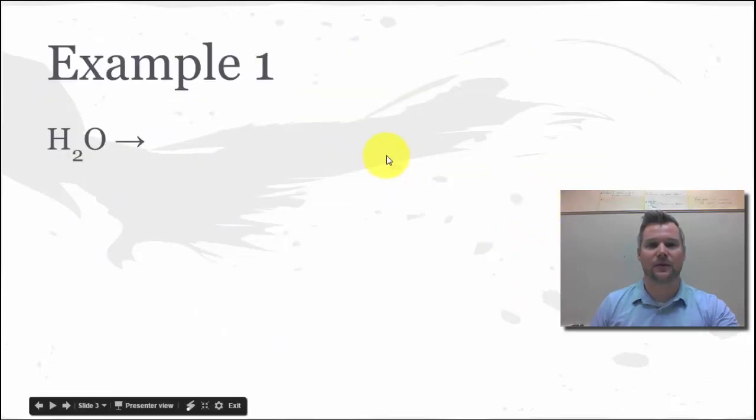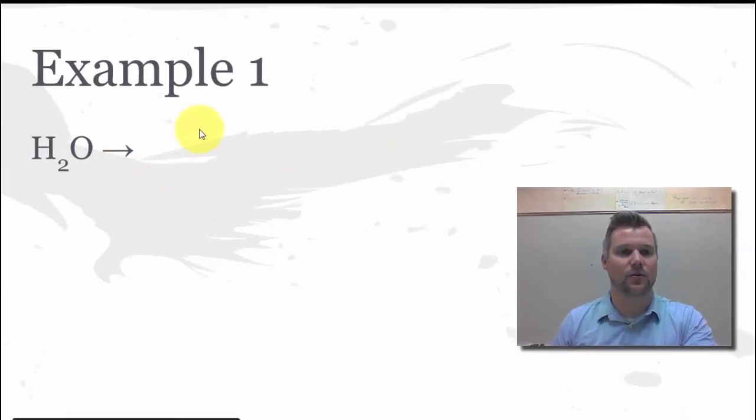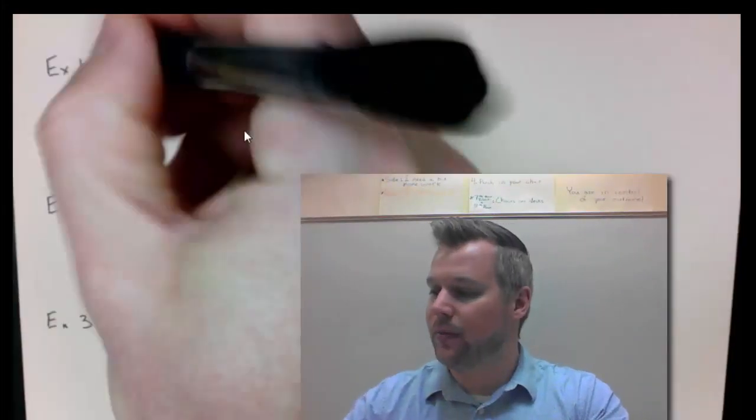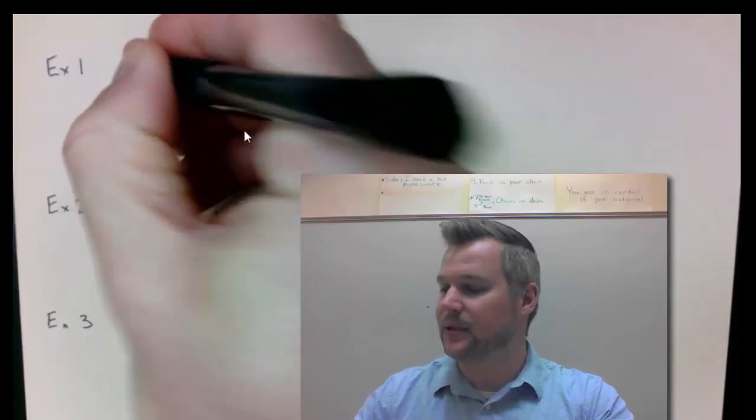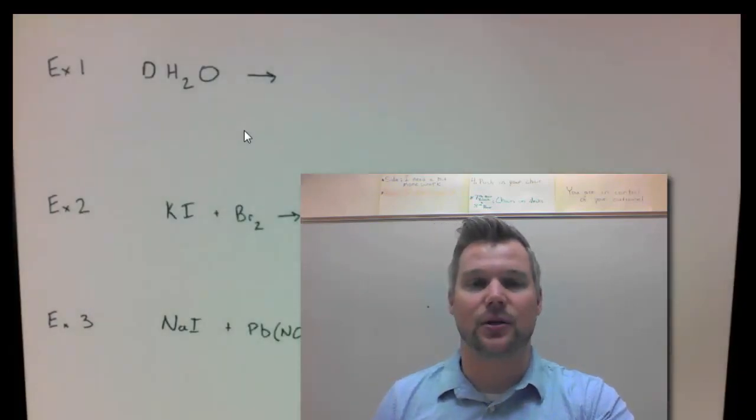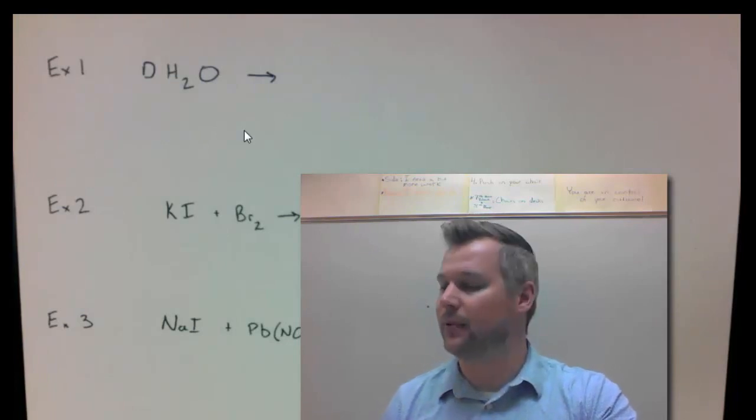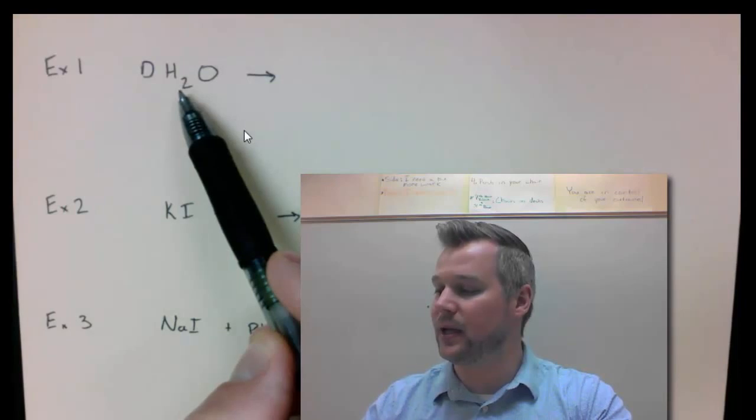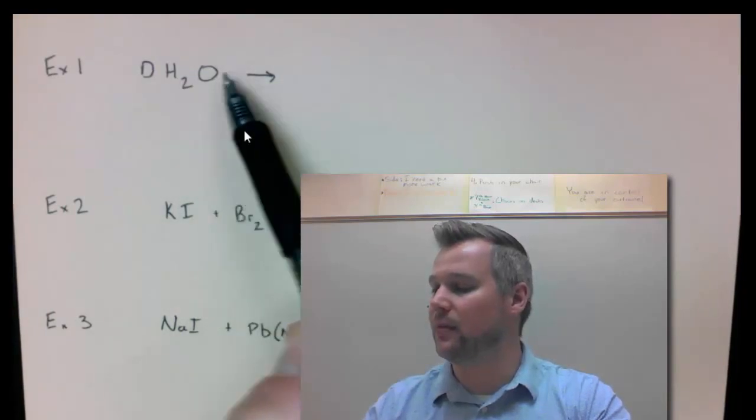I have some examples of how to do this. So the first example problem is H2O. That is one reactant, so if I go through my steps that means I have a decomposition reaction. My reaction pattern step number two is to follow the decomposition pattern: AB turns into A plus B.